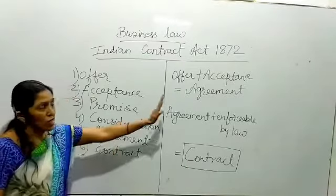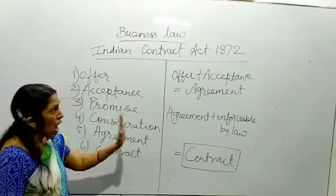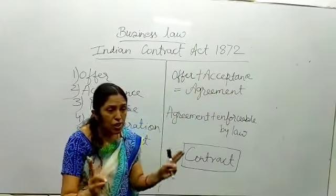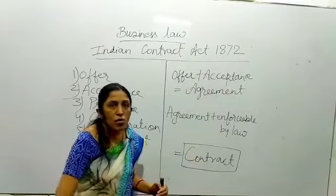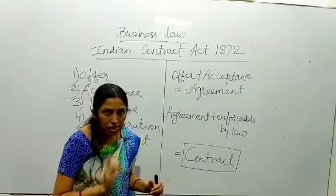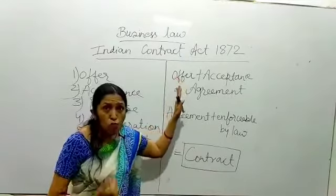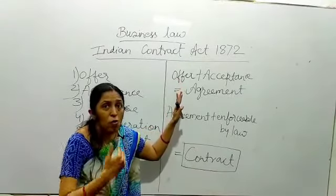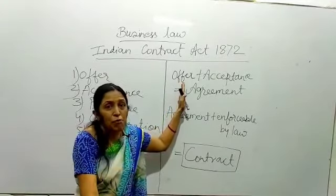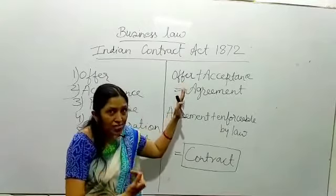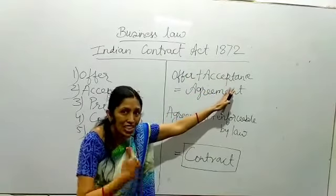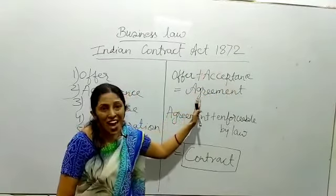Ab hum score definition bana karke padhte hain. Theek hai — ab offer plus acceptance. Business mein dekho, hamesha do parties hoti hain: ek vastu evam sevaon ko bechne wali, doosri usko kharidne wali. Toh jo pehli party hoti hai jo vastu evam seva ka prastaav rakhti hai — offer rakhti hai — aur jab doosri party usko accept kar leti hai, sweekar kar leti hai, tab woh ban jata hai: agreement.